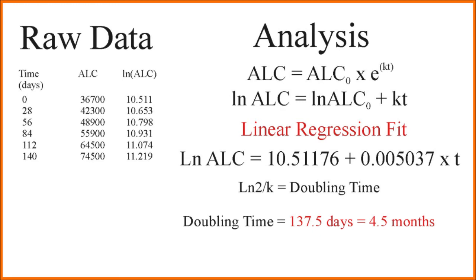How do we get doubling time? Well, there's a simple relationship between doubling and the slope of this line. And that is that the natural log of 2 divided by the slope of the line, k, is equal to the doubling time in whatever units your time was in. For this particular result, the doubling time comes out to be 137.5 days or about 4.5 months. Now, if this was you and you had this data for your lymphocyte counts as a function of time, this would suggest that you are ready for treatment.